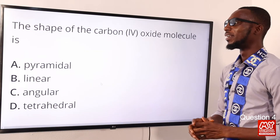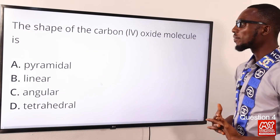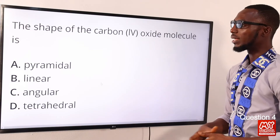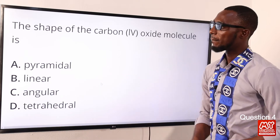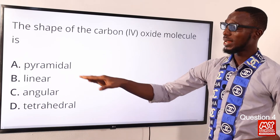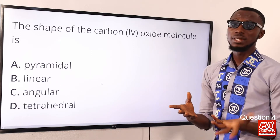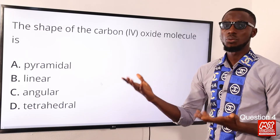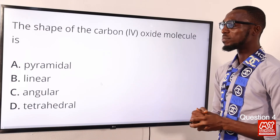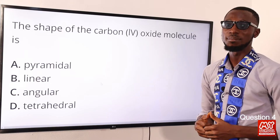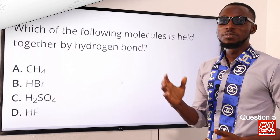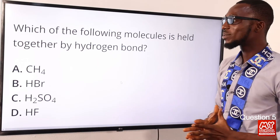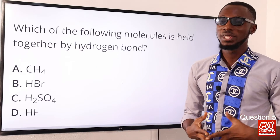Question four: the shape of the carbon dioxide molecule is what? Its shape is linear. Trigonal pyramidal refers to ammonia; angular refers to water. So the correct option is option B for linear shape. Question five: which of the following molecules is held together by hydrogen bonds? Hydrogen bonding is a type of weak dipole-dipole attraction.